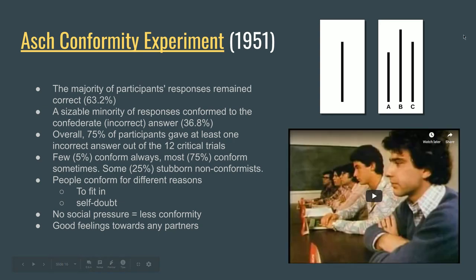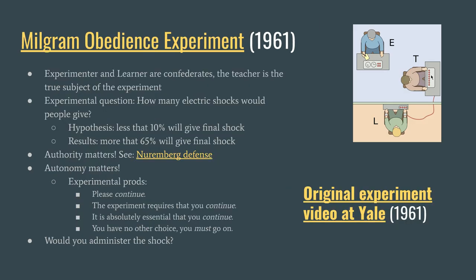One of Solomon Asch's students, Stanley Milgram, developed an elaboration of this experiment in the early 1960s called the obedience experiment. The important thing about the obedience experiment is that it's not a peer situation — you're not just responding to peer pressure, you're responding to authority. The obedience experiment is about how likely people are to listen to an authority figure.